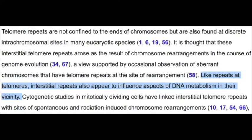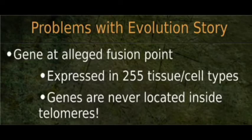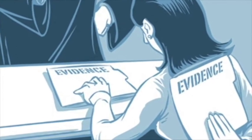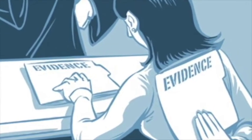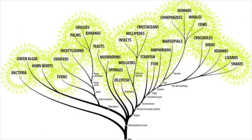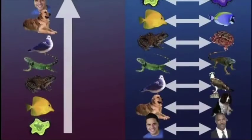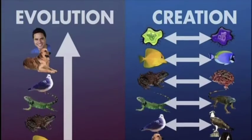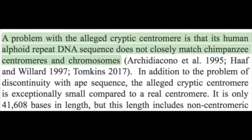Third, the alleged fusion site is actually a functional promoter element expressed in half of all major tissue types and serves regulatory functions, making it a highly expressed and complex gene not found in apes. Fourth, one does not move up the evolutionary ladder by losing information — humans have 6,000 fewer genes than chimps, with 50 that are not found in any chimpanzee. Fifth, we only find several hundred repetitive sequences — one-tenth the size of a real centromere — and sequences are not specific to centromeres, found throughout human chromosomes.